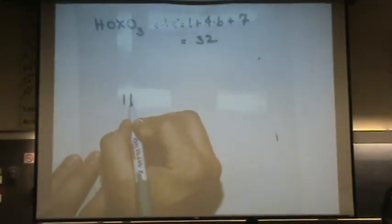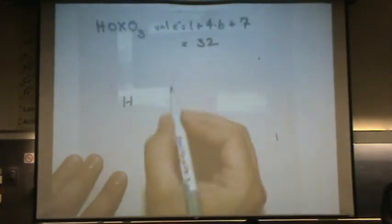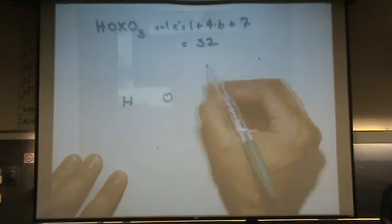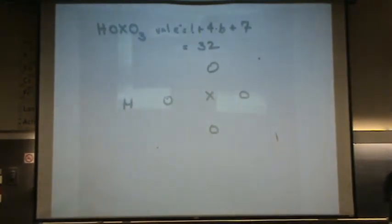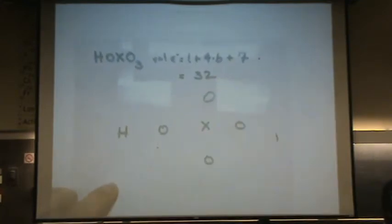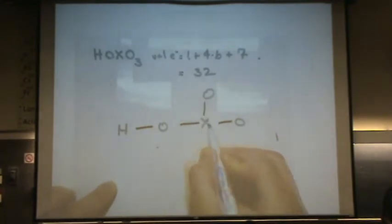So the structure here is given in the drawing. It's an H, then comes an O, then comes an X, then comes three O's attached to that X. So next, my next step is to do what I call the skeleton. Now my next step is to start filling in these 32 electrons. I start with the bonds first. Two, four, six, eight, ten.